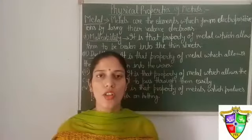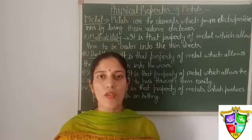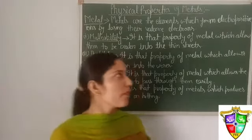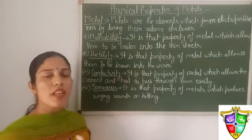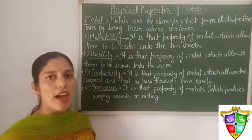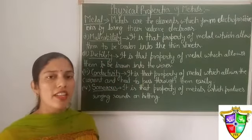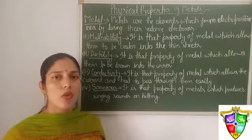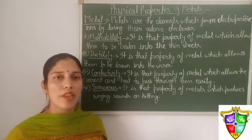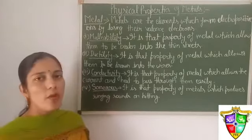Hello everyone, today we will study about the physical properties of metals. Metals are those elements which form electropositive ions by losing their valence electrons. There are various metals present in nature, for example gold, silver, copper, and aluminium — all these are called metals.